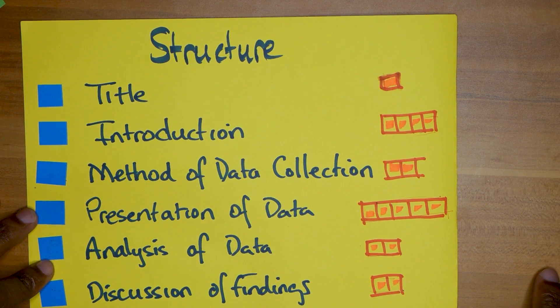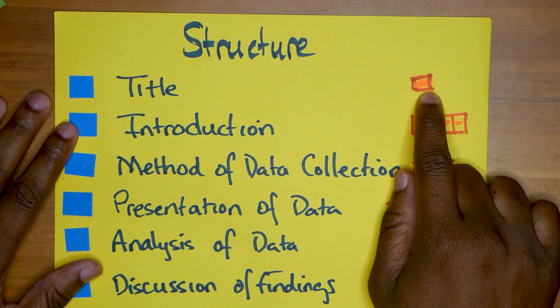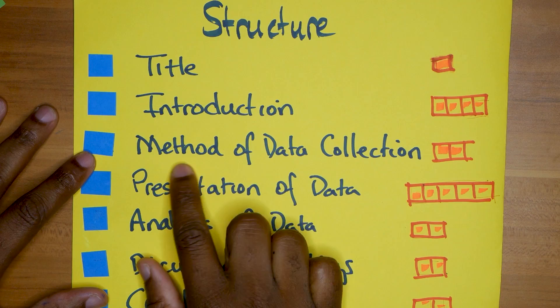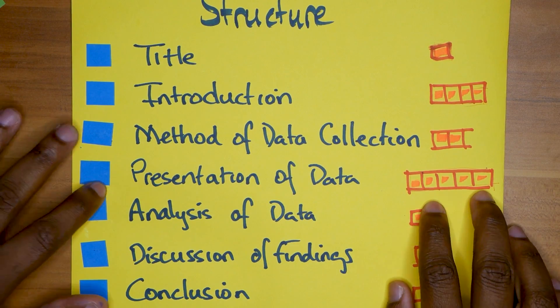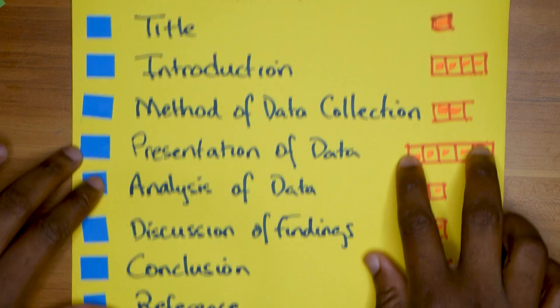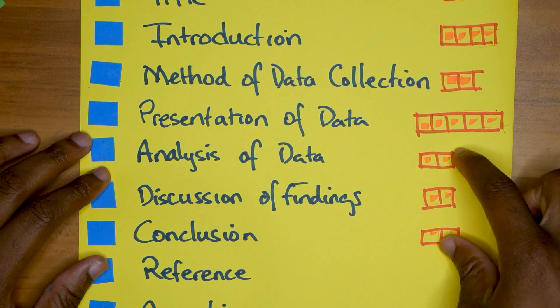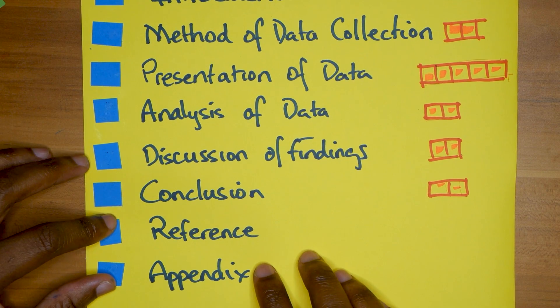This is the actual structure of the SBA. You have a title, this is worth one mark. You have an introduction with four marks, method of data collection which is worth two marks, your presentation of data with the most marks at five, then analysis of data, discussion of findings, and conclusion, all with two marks.